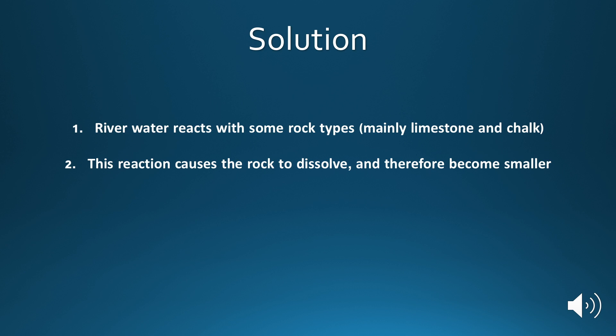This process causes the rock to dissolve and therefore become smaller and erode. So to conclude, there are four methods of erosion you should know: hydraulic action, abrasion, attrition, and solution.